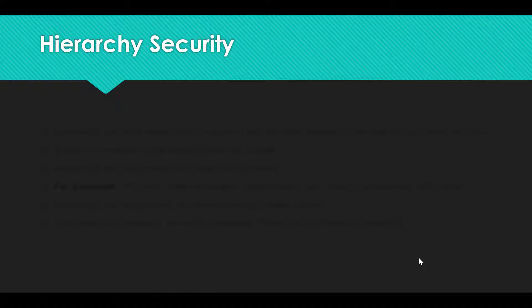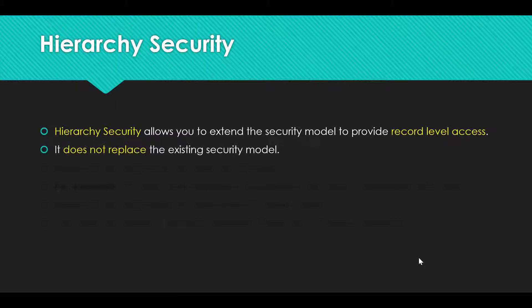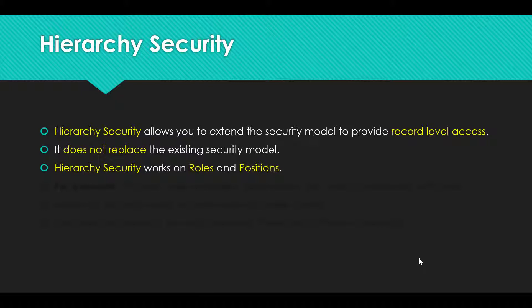Let's have a look at some of the points of hierarchy security in Dynamics 365. Hierarchy security allows you to extend the security model to provide record level access. It does not replace the existing security model, so it just helps you to extend the security model but does not replace it. Hierarchy security works on roles and the position that you hold in your organization.